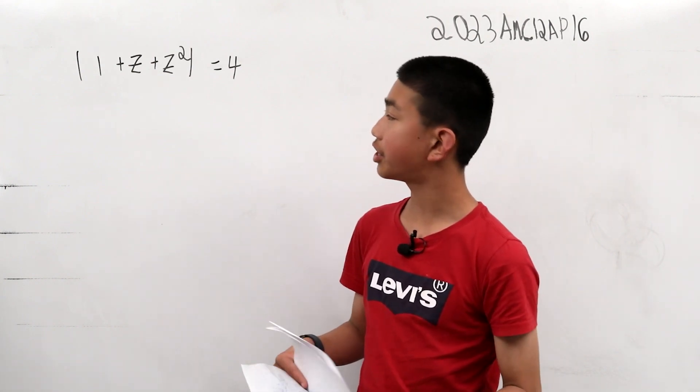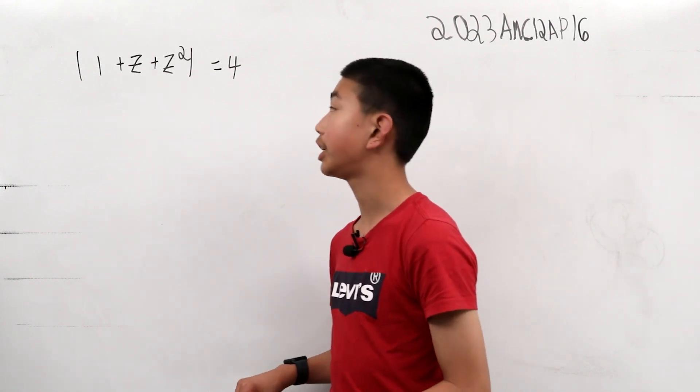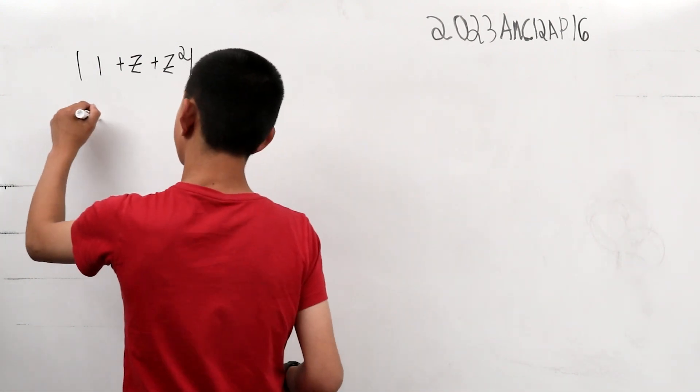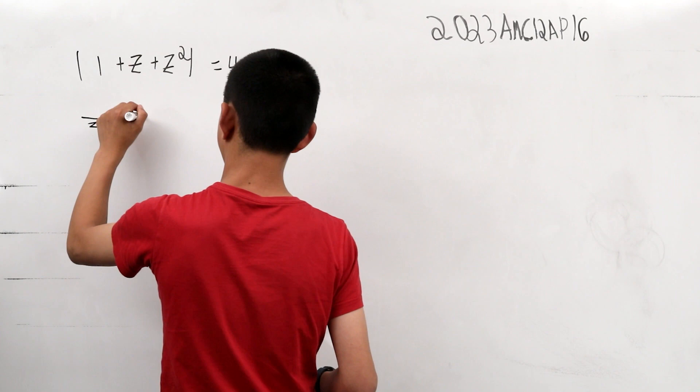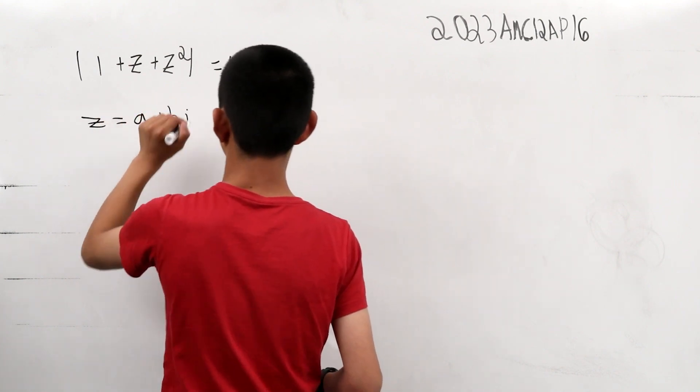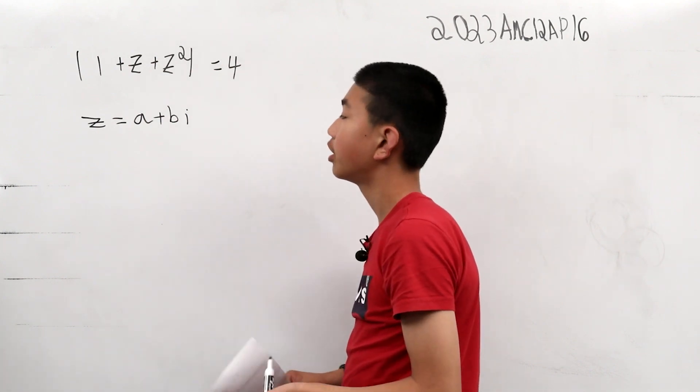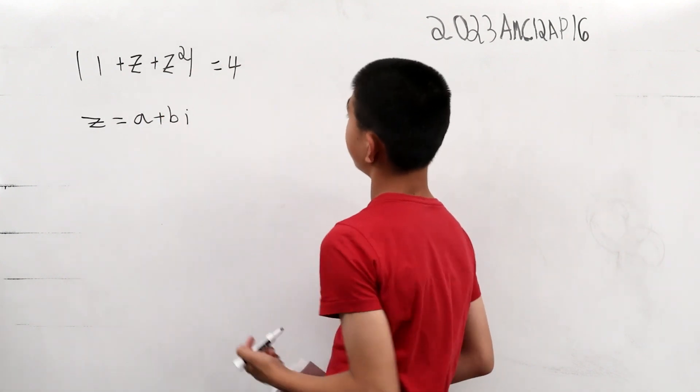Since we want imaginary numbers and we want it in an imaginary form of z, we can make the substitution of z equals a plus bi. And this is basically a complex number here, an expression for one. Now we can substitute this into there.